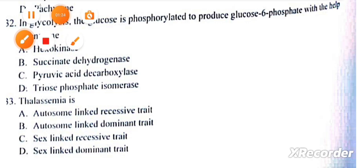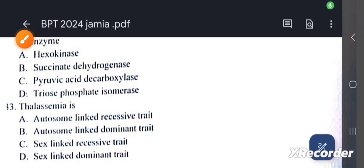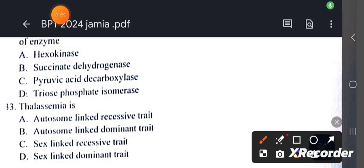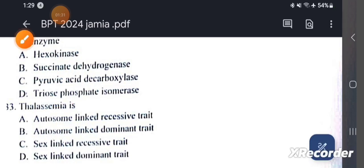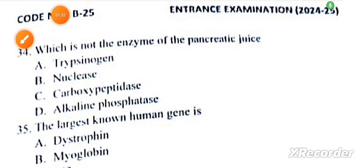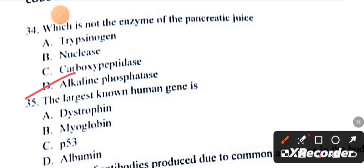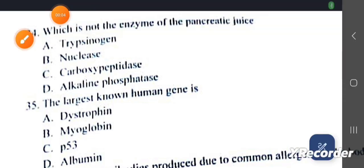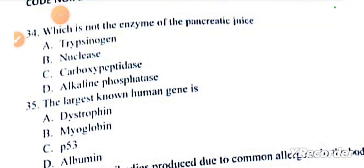Thalassemia is an autosome-linked recessive trait. Question number 34: Alkaline phosphatase is not an enzyme of the pancreatic juice. The largest human gene is dystrophin.